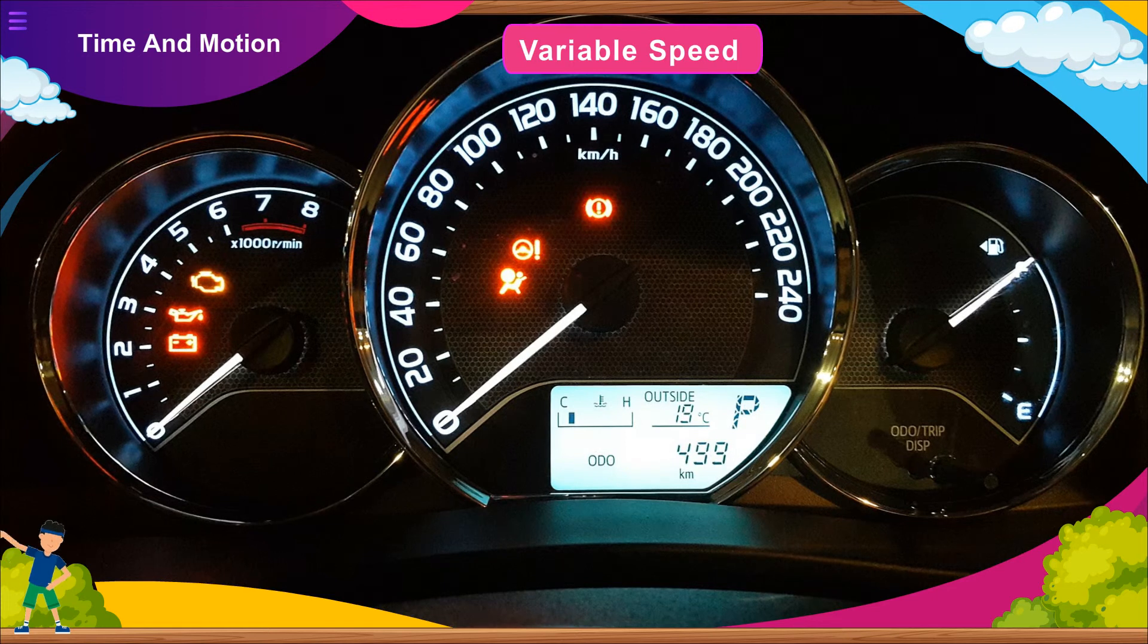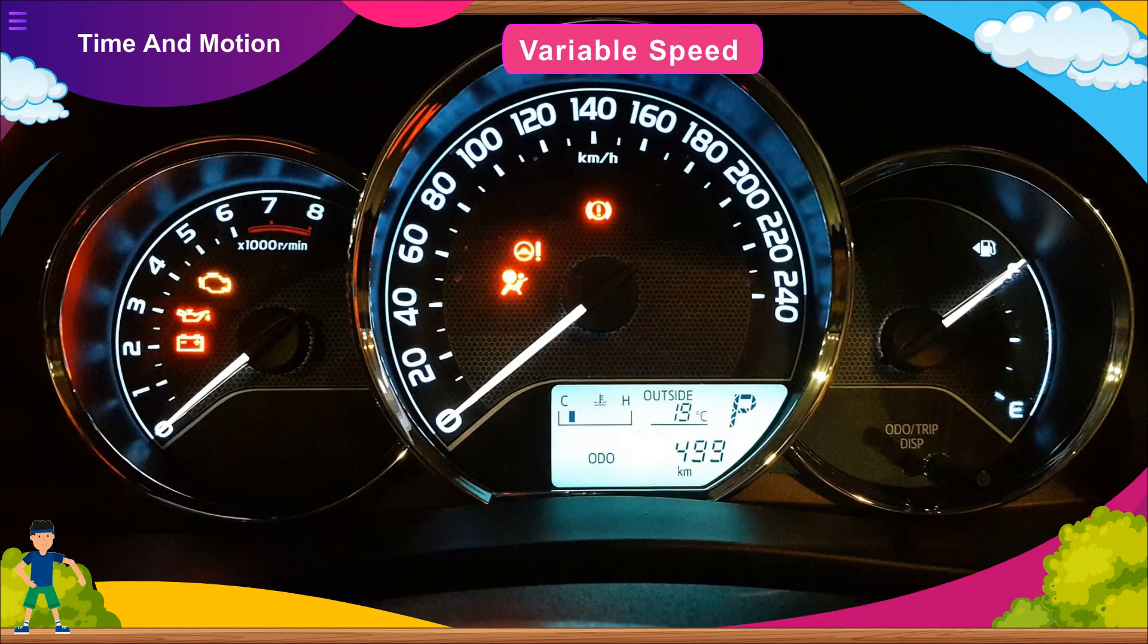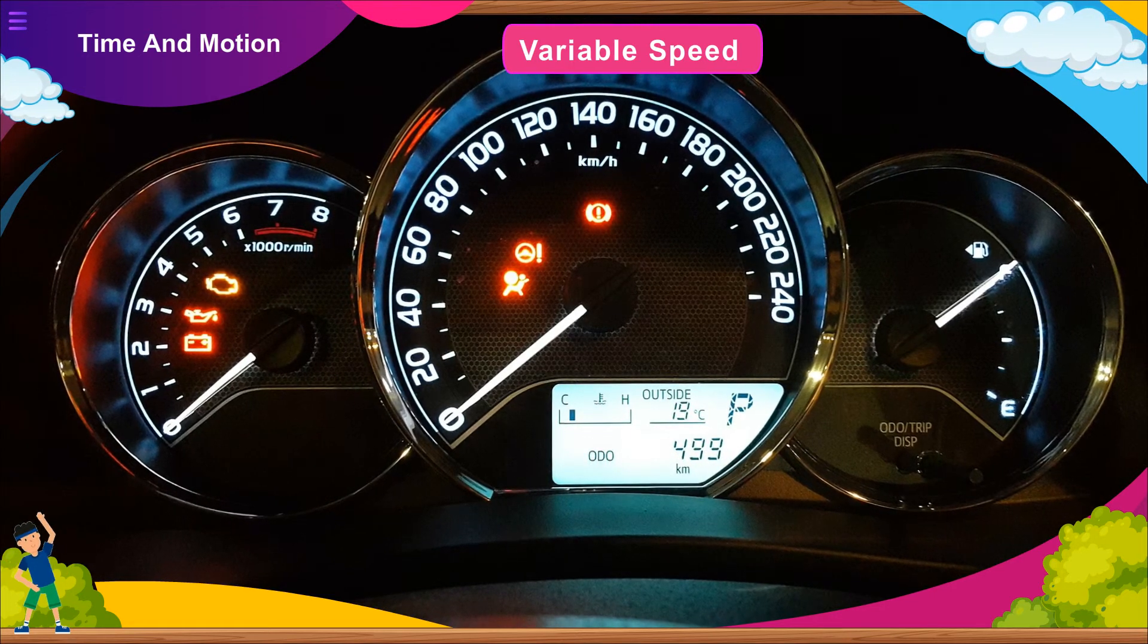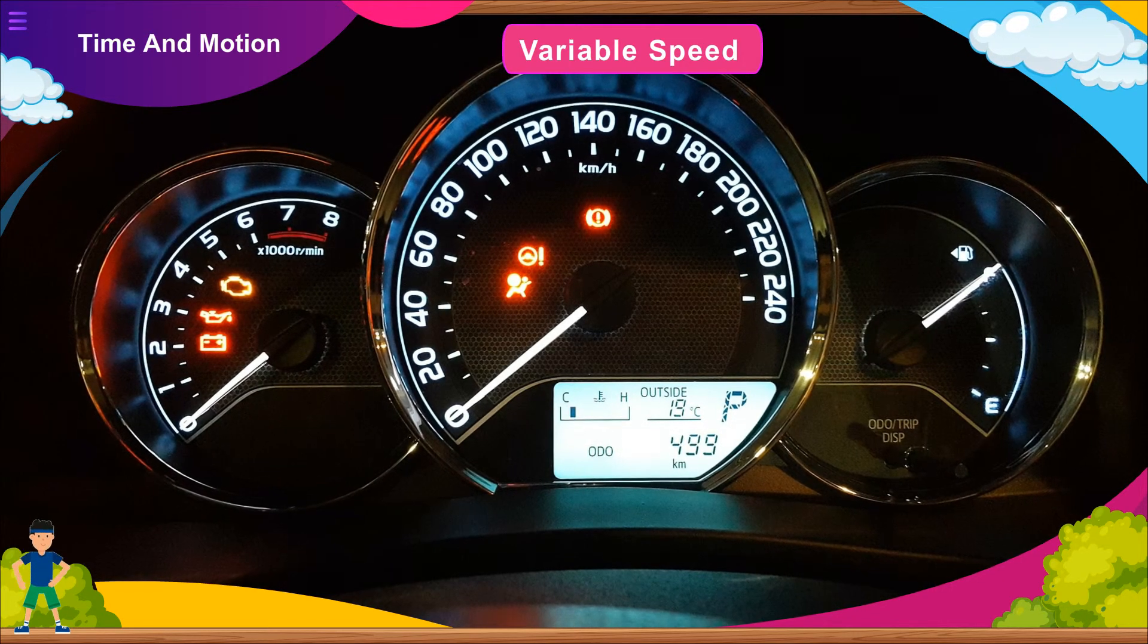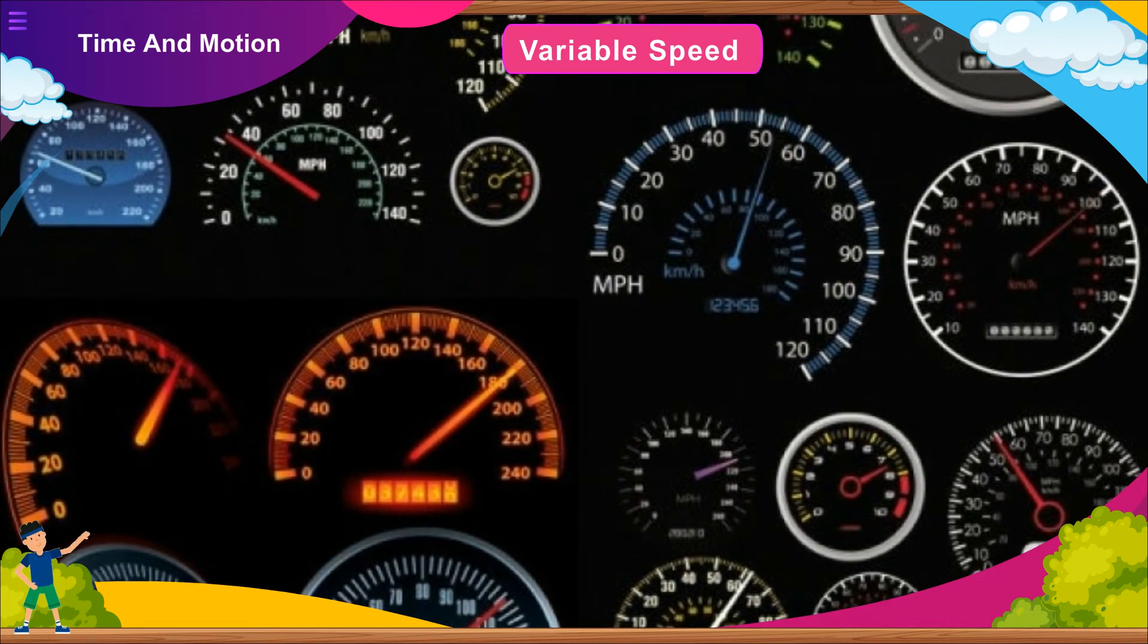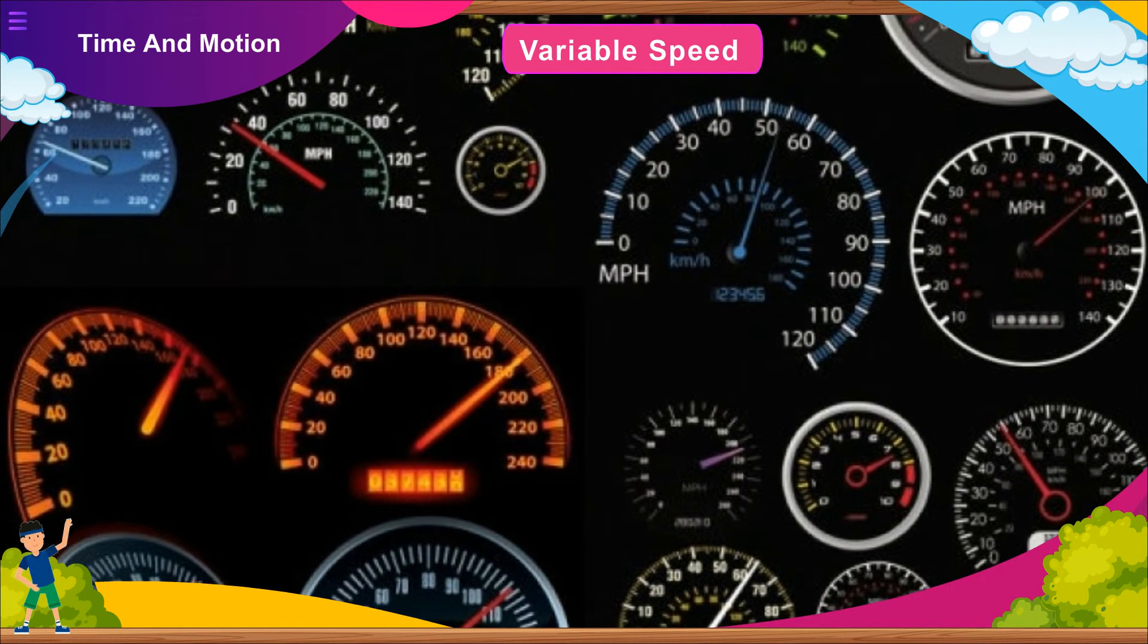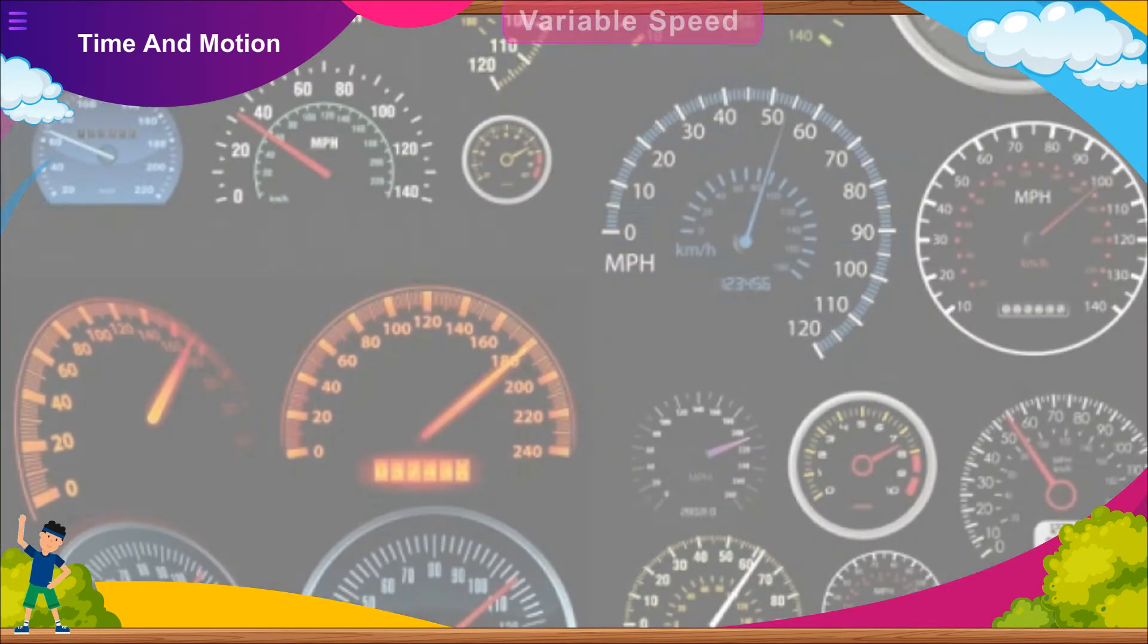Two kinds of meters are fitted on the dashboard of a car. One of the meters has kilometer per hour written at one corner. This is known as speedometer, which records the speed. There is another meter called odometer, which measures the distance covered by the vehicle.